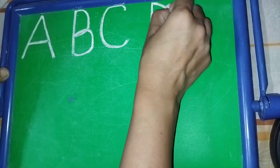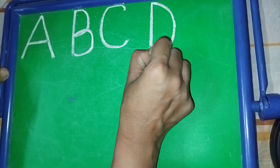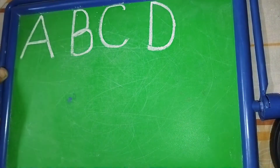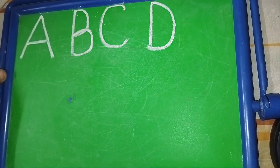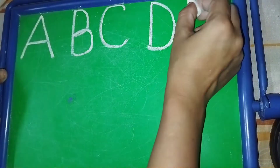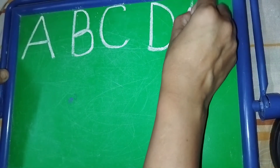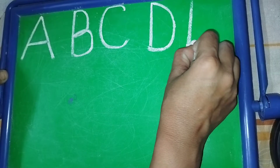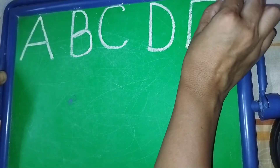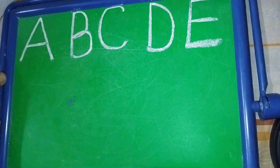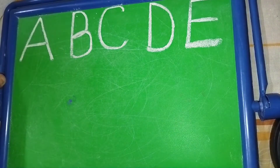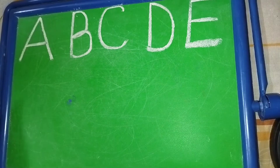D. D for dog. Dog means kutta. E. E for elephant. Elephant means hati.